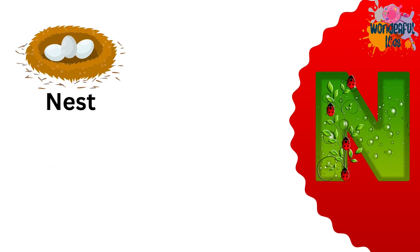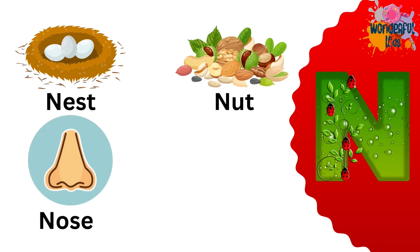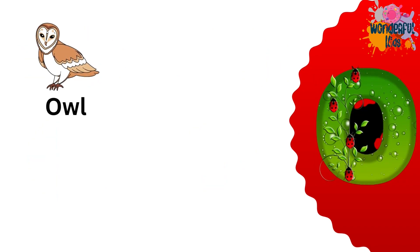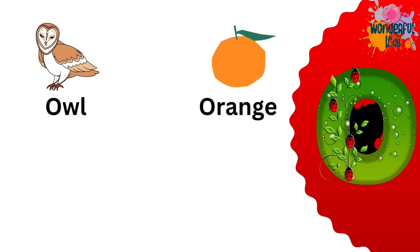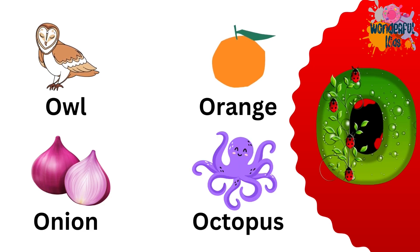N for nest. N for nut. N for nose. N for neck. O for owl. O for orange. O for onion. O for octopus.